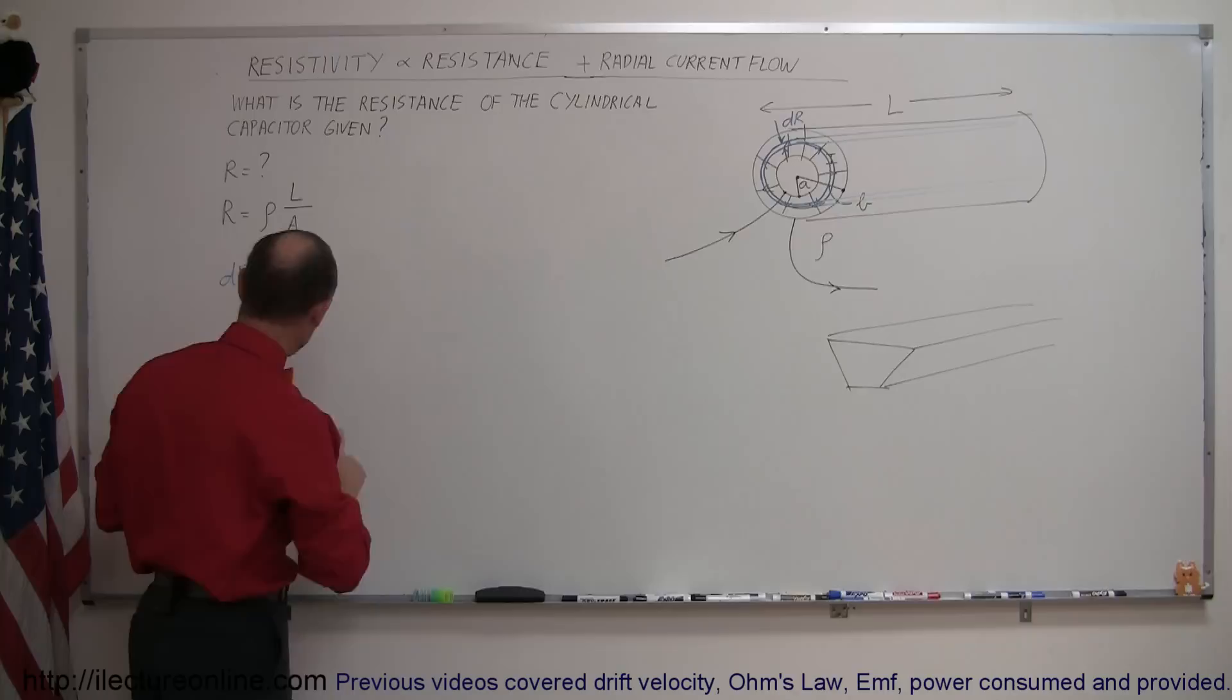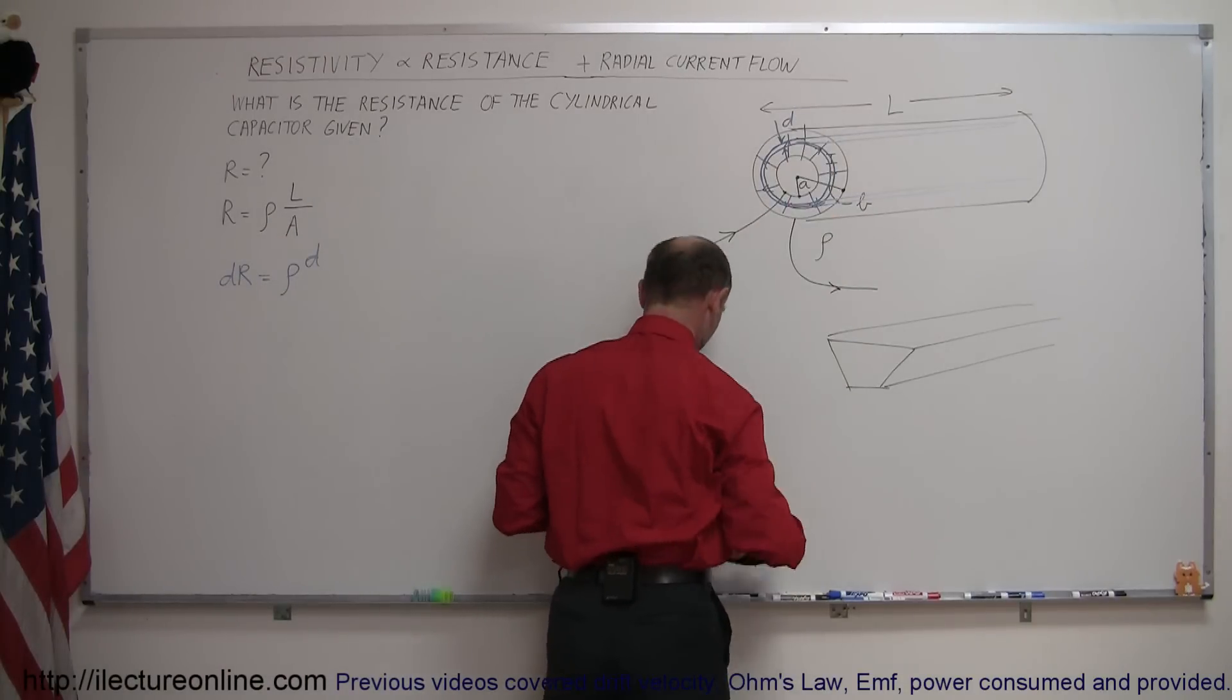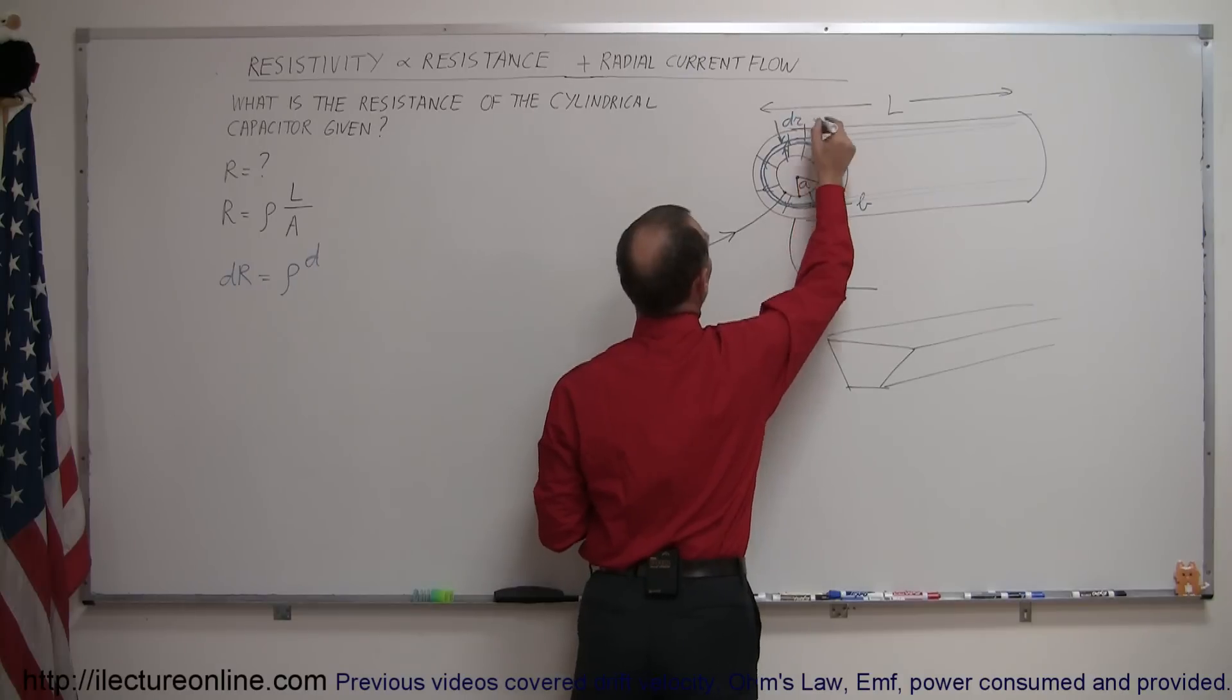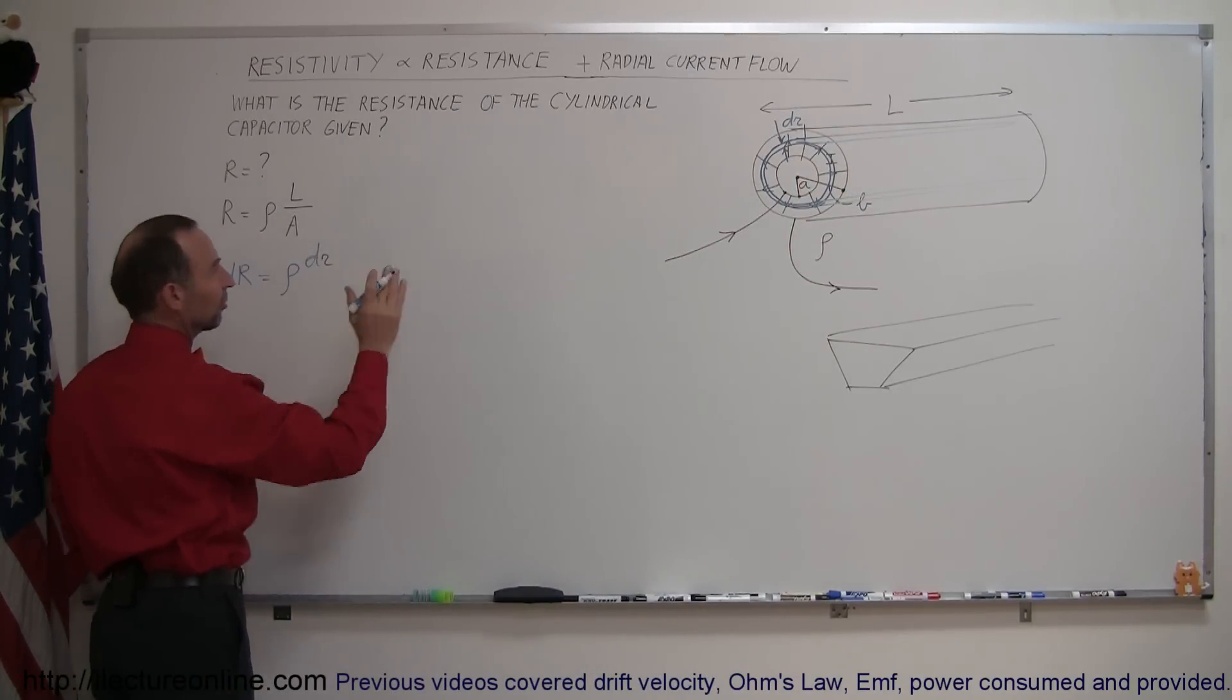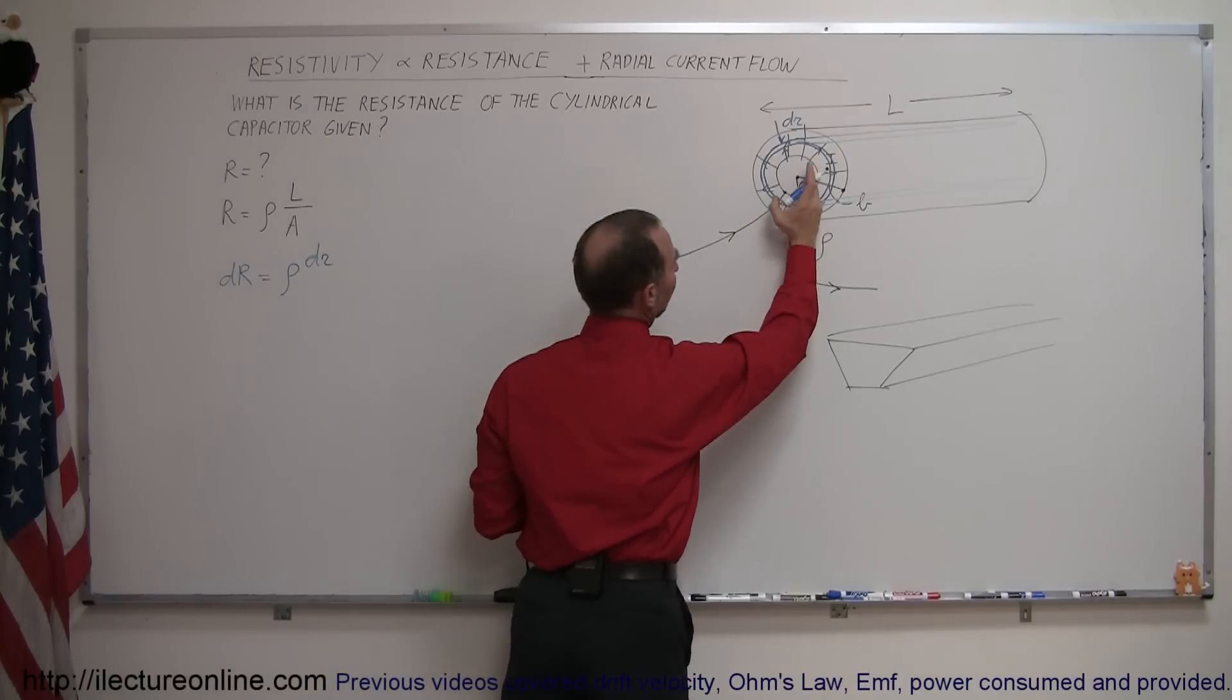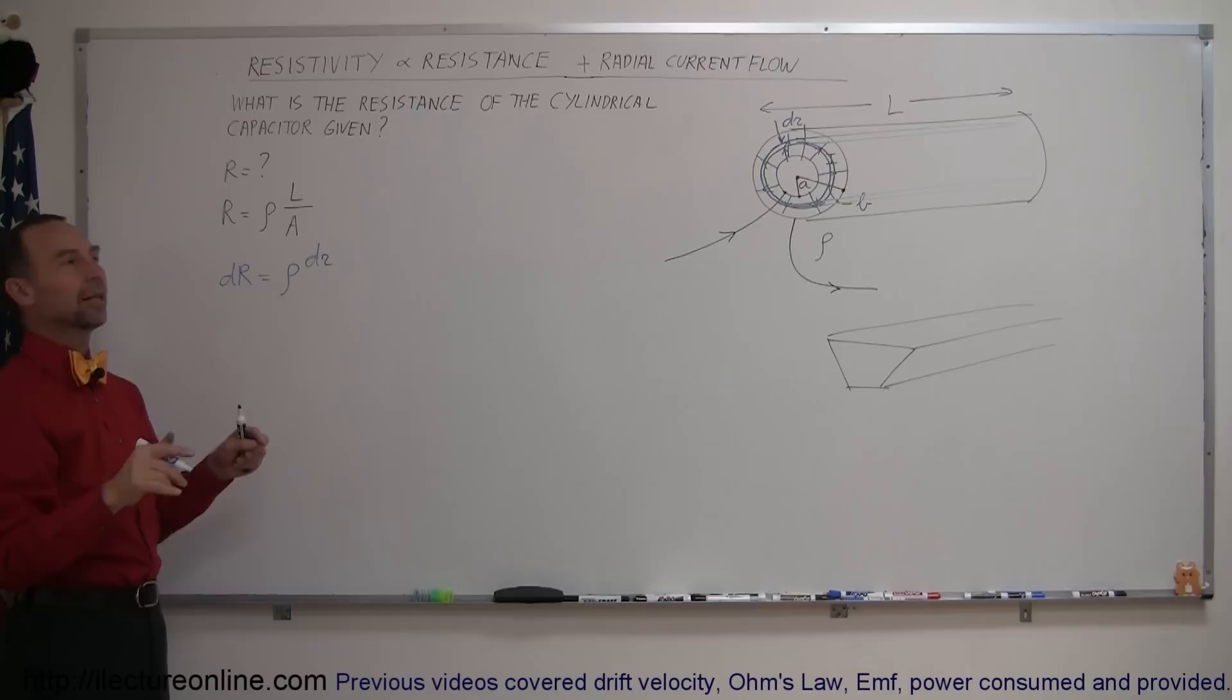So the length of travel would be dr. I can't use big R because I already used big R for the resistance. So I'm going to use little r for the radius. So I'm going to call it a little dr. That's a distance that the current has to flow from the inside to the outside through that little segment right there.